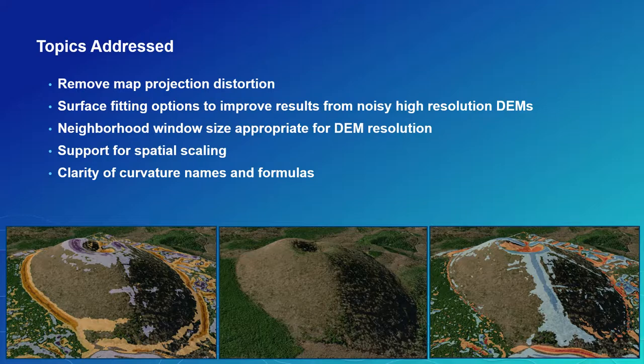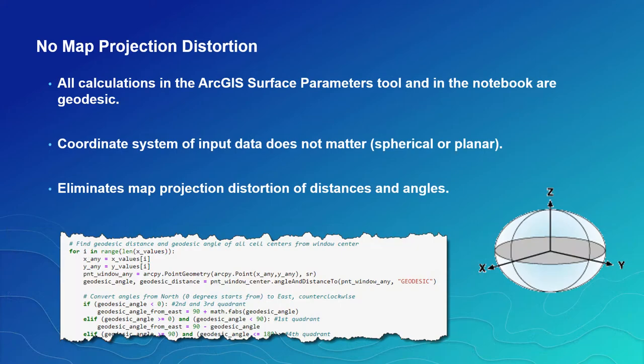The tool and Notebook address multiple issues we've wanted to work on in our surface tools for a while, such as minimizing the distortion and user errors around map projections, to provide other surface-fitting options for working with high-resolution DEMs. Also, regarding high-resolution DEMs, we provide a user-defined neighborhood, which is also useful for spatial scaling. And finally, to provide some additional curvature types with clear, unambiguous names and formulas. The graphics at the bottom are of a small cinder cone near Mt. Fuji in Japan, showing profile curvature on the left and tangential curvature on the right. This sample dataset is provided with the Notebook.